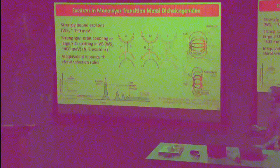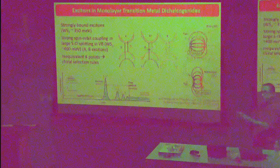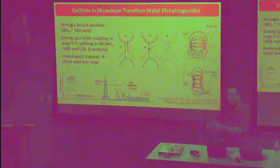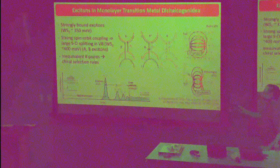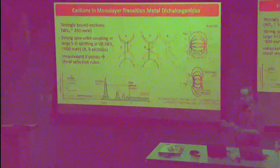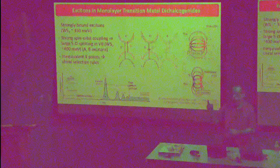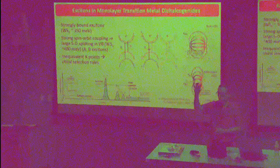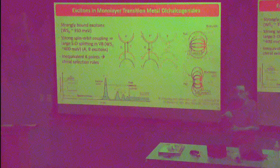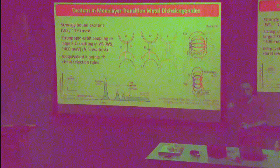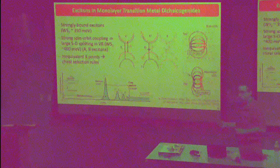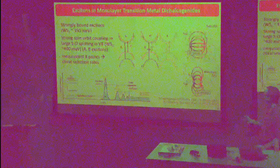These materials also have very interesting chiral selection rules. Because you break the symmetry — you have two types of atoms instead of just carbon as in graphene — you have inequivalent points in the Brillouin zone. You can excite one place in the Brillouin zone with light circularly polarized one way, and another place with light circularly polarized the other way. This is so-called valley-selective excitation.